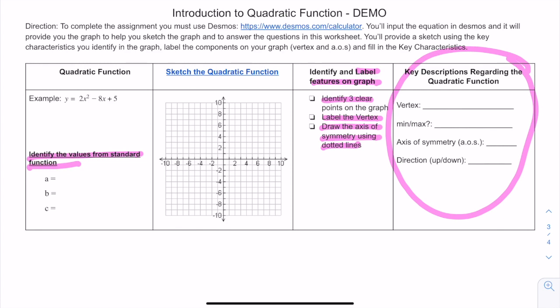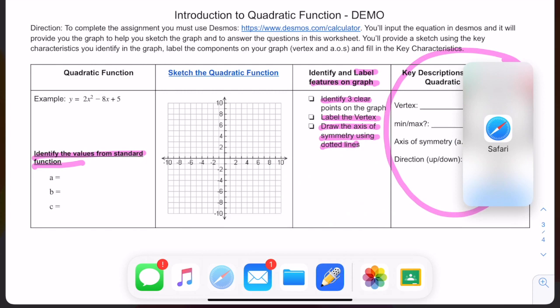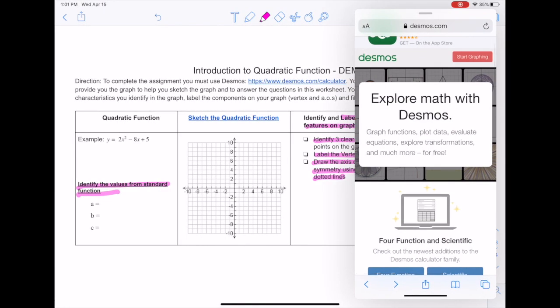To do a split screen feature, all you need to do is swipe up, make sure your worksheet is already loaded on Notability, then grab the app you want to use such as Safari and drag it to the side. This will allow you to split the screen or create a multi-screen that overlays with one another.